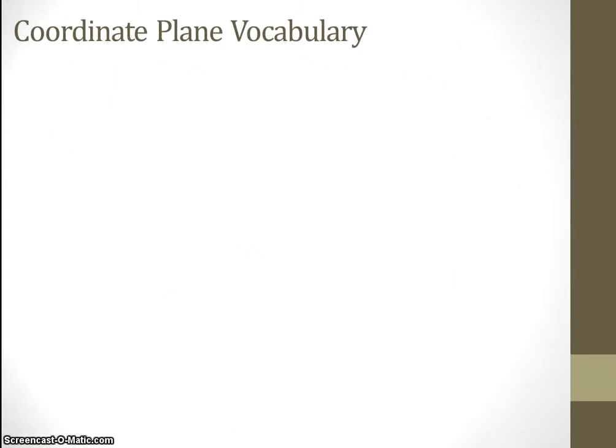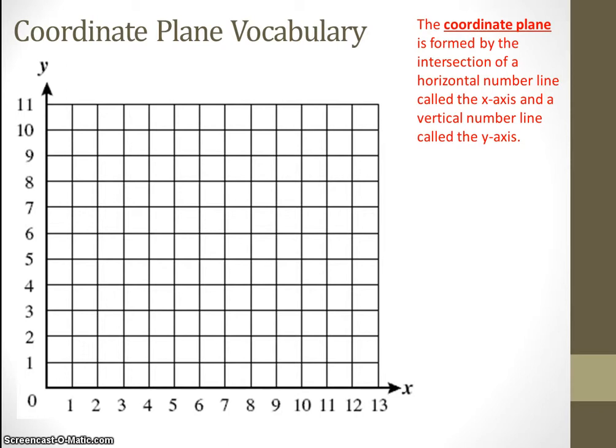First, let's review the coordinate plane vocabulary. What you see here is a coordinate plane. A coordinate plane is formed by the intersection of a horizontal number line called the x-axis and a vertical number line called the y-axis. So this picture right here is called a coordinate plane.